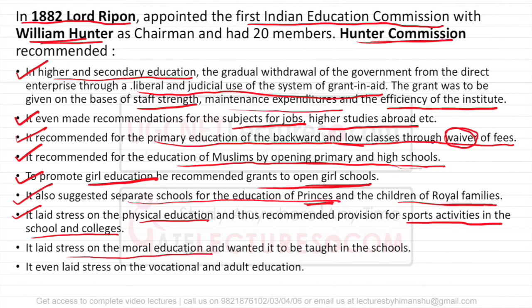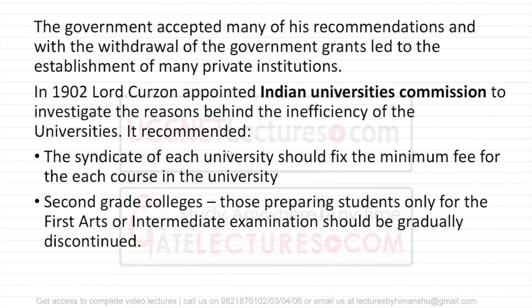The Hunter Commission recommended primary education for backward and low classes through waivers of fees — the first time in India someone made a recommendation for backward classes with fee concessions and scholarships. It also recommended education for Muslims by opening primary and high schools, believing their existing education was not up to the mark. To promote girl education, it recommended grants to open girls' schools, as it was not satisfied with the number of schools for girls. It also suggested separate schools for princes and children of royal families. The commission laid stress on physical education, moral education, and vocational and adult education. The government accepted many of these recommendations, and the gradual withdrawal of government grants led to many private institutions opening up.